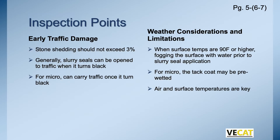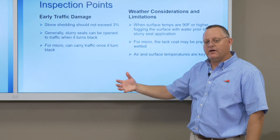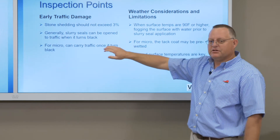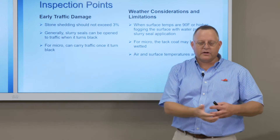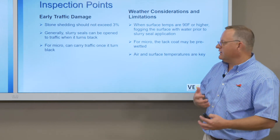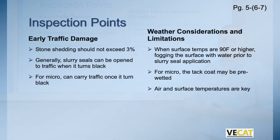Some other things to look at: early traffic damage. Because it has an emulsion, it takes time for the binder and water to separate, set up, and harden. If traffic gets on it too early, it'll cause damage — making sure traffic doesn't cause stone to start flying off. The spec says stone loss should not exceed 3%. Usually once it turns black — it'll go from a brown as the water and asphalt start to separate, then to black when it's setting — by that time you've got enough strength to allow it to be open to traffic.